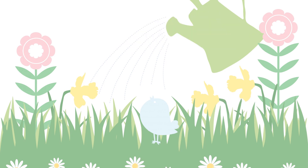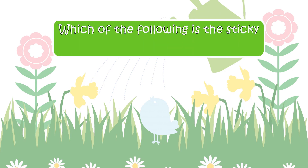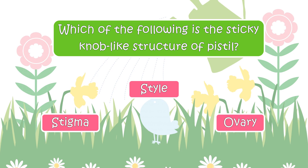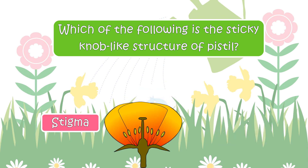Which of the following is the sticky knob-like structure of Pistil? Your options are Stigma, Style, or Ovary. The right answer is Stigma.